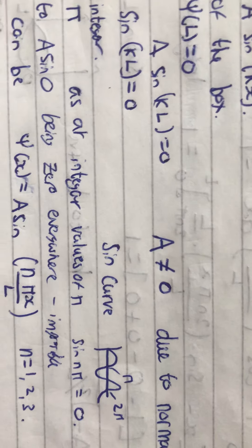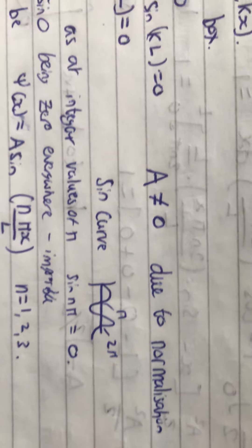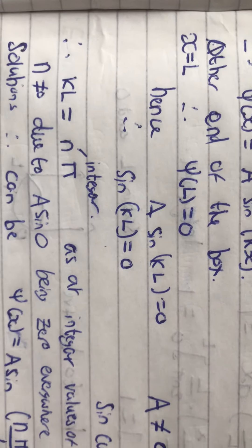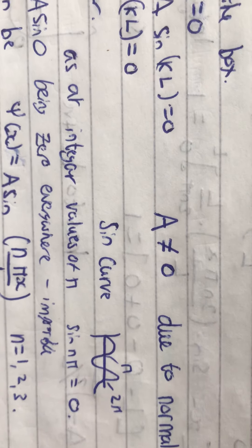And, as I just mentioned, the integer values of pi, sin(pi) equals 0. But n can't equal 0 due to sin(0) being 0 everywhere, which is impossible.